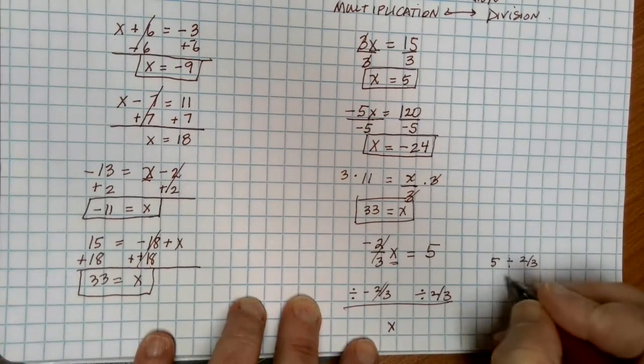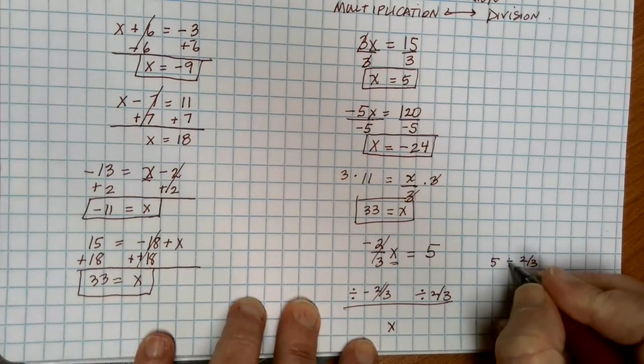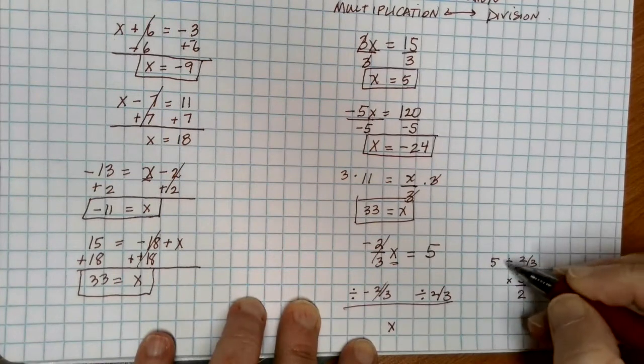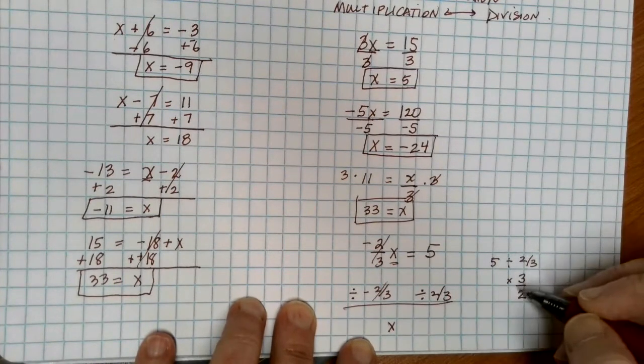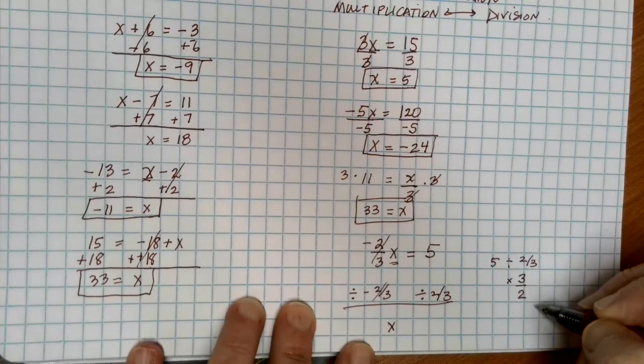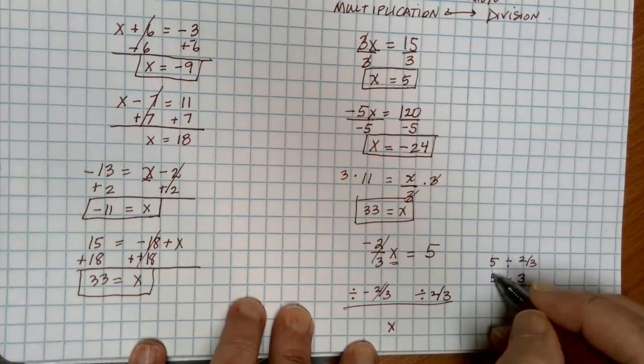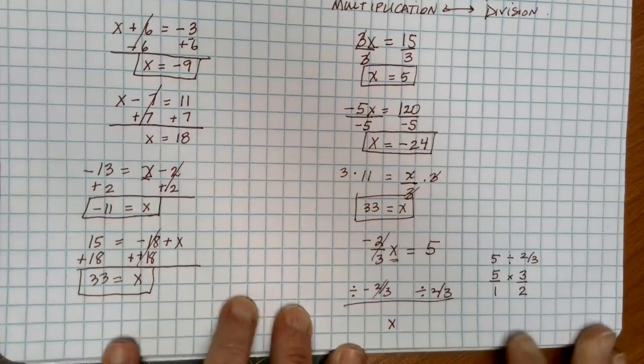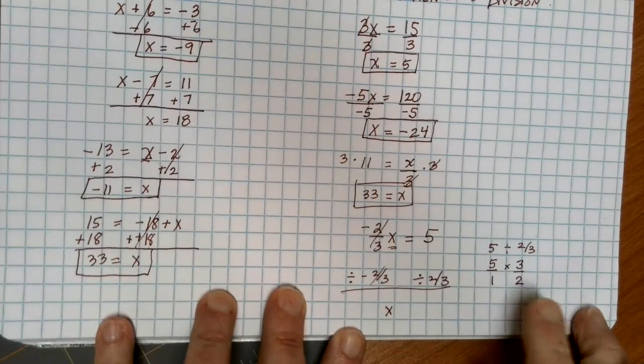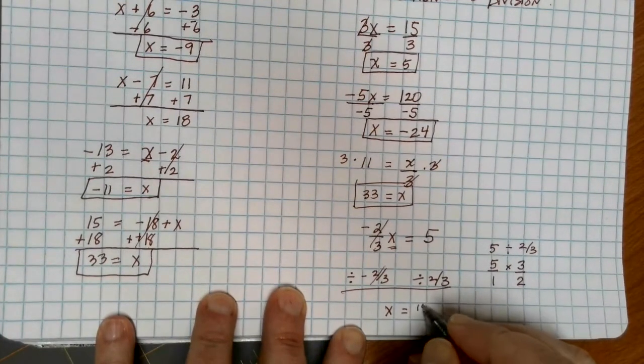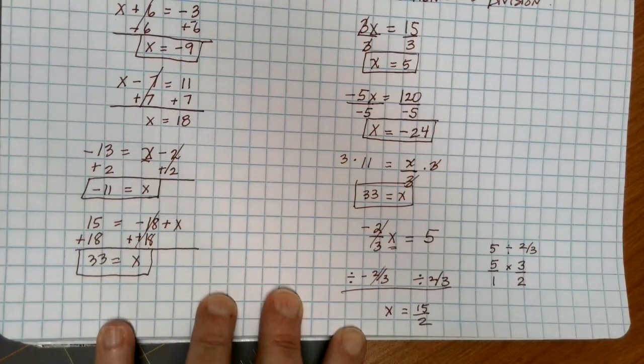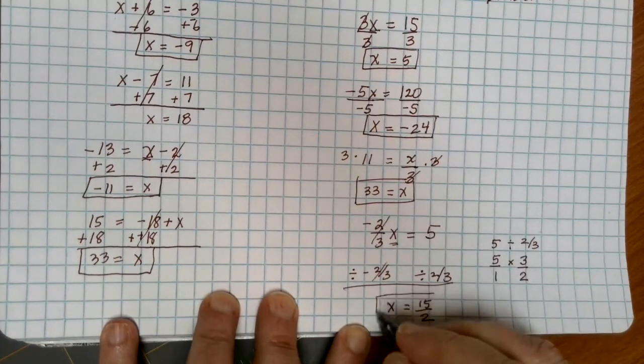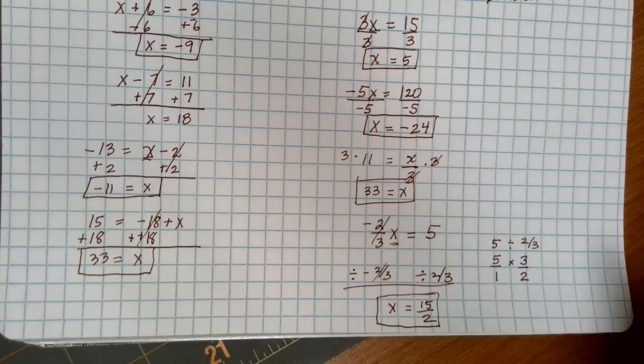But if I do 5 divided by 2 thirds, remember, to divide fractions, we need to change the fraction division to multiplication, and flip the second fraction over. So instead of 5 divided by 2 thirds, I'm going to do 5 times 3 over 2 instead. Now, to multiply fractions, it probably is helpful to think of that as 5 over 1, so I can multiply across the top and multiply across the bottom. 5 times 3 is 15 on top, 2 on the bottom. It's fine to leave your answer as improper fraction like this. Just make sure it's simplified. In this case, there's nothing that would go into both 15 and 2, so we can call that our solution right there.